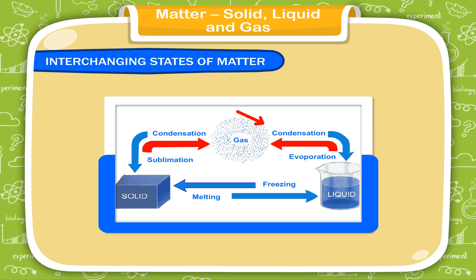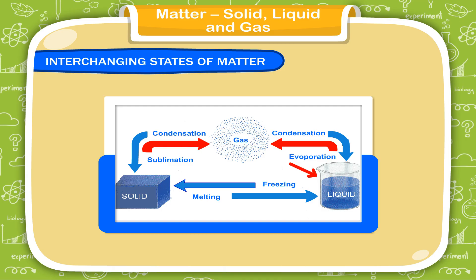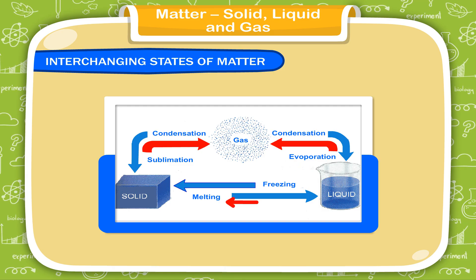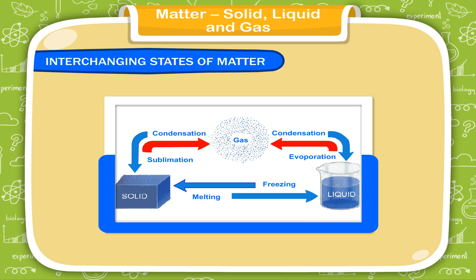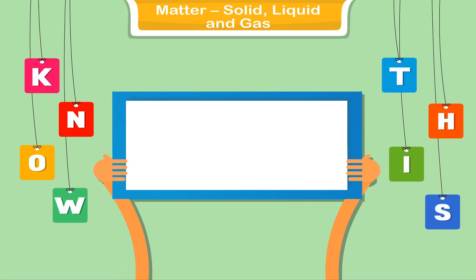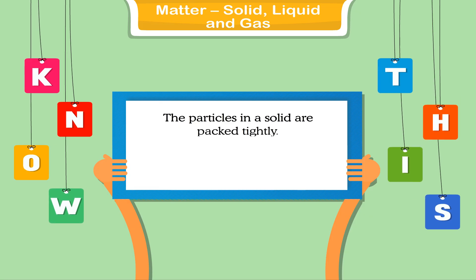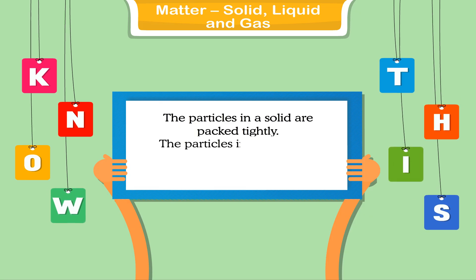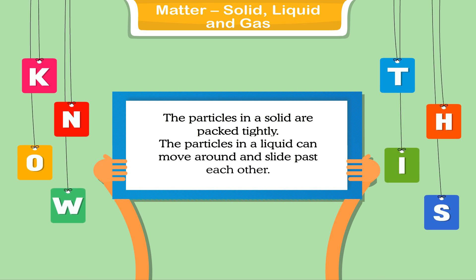You have already learnt that water vapor, a gas, can be condensed to form a liquid, water. And on further cooling, it freezes to form a solid, ice. So, matter can be changed from one state to another by heating or cooling. The particles in a solid are packed tightly. The particles in a liquid can move around and slide past each other.